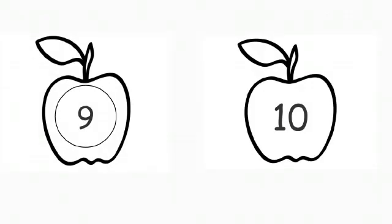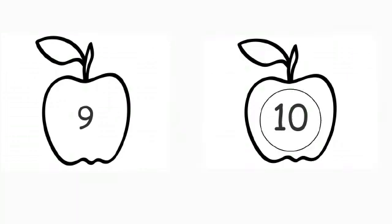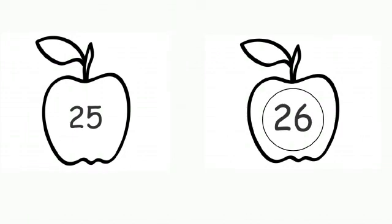Day 4: What comes after? Okay, tell me children, which number is this? Number 9. So what comes after 9? Excellent — 10. 1, 0, 10. Very good. So what is this number? Number 25. 2, 5, 25. So what comes after 25? 2, 6, 26. Fantastic.